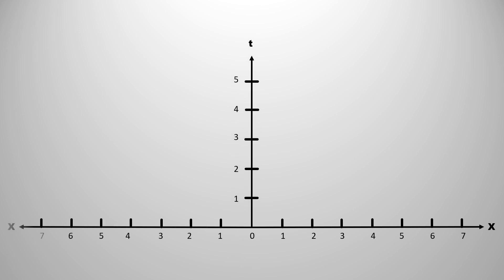If an object is in rest, means it is not moving, then it will remain at the same position at time t equals to 0, t equals to 1, t equals to 2 at all times. In this case, the vertical straight line represents an object that is in rest.